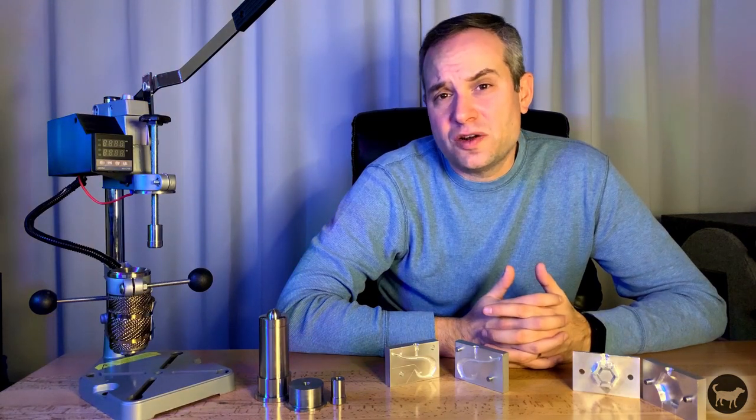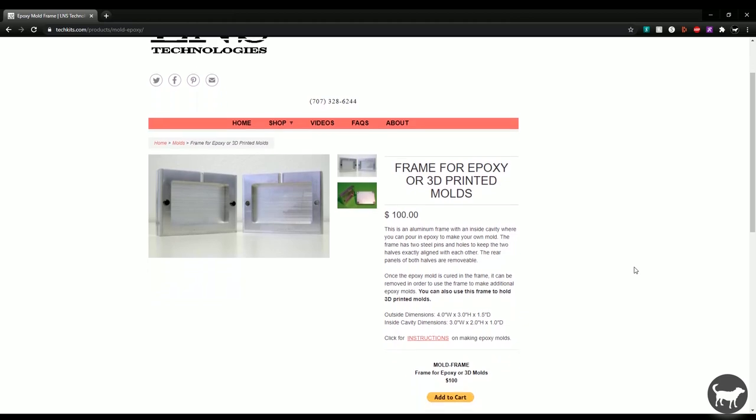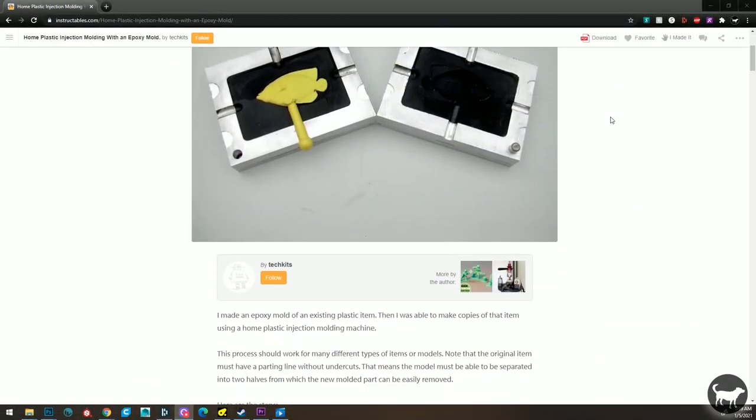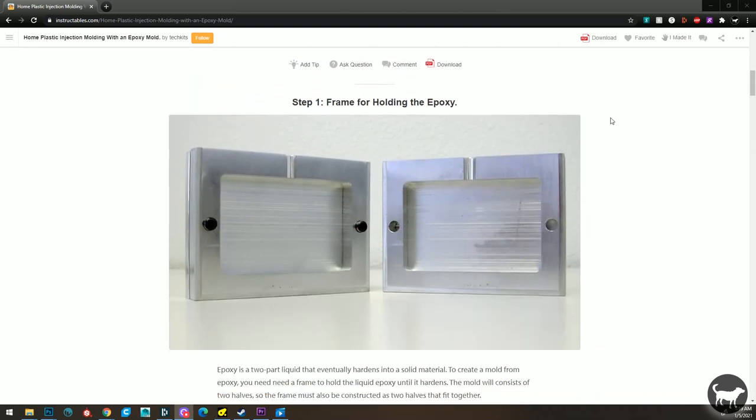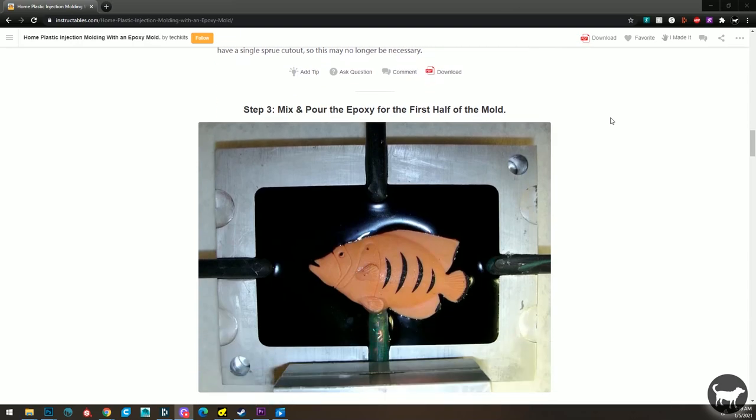The last and final way of creating a mold would be to buy an aluminum frame from a company such as TechKits and create an epoxy mold. They created a great write-up on the Instructable site with a video as well showing the process. Links to this and everything I talked about are in the description.